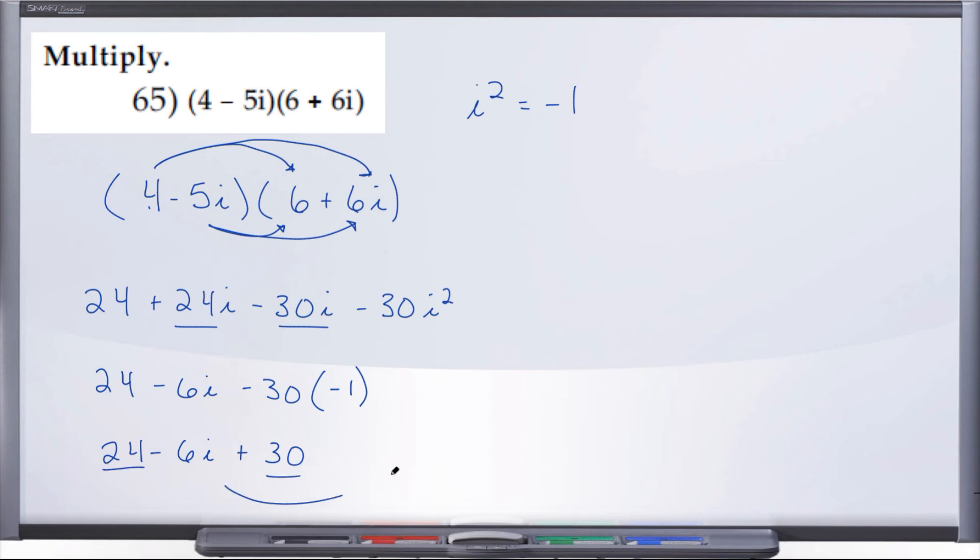So, now when we combine like terms again, 24 plus 30 is 54, and minus our 6i. And there we have it, the final answer for 65. And the reason we want to keep it like this is so that we're in a plus bi form, where a is your real number and bi is your imaginary number here.